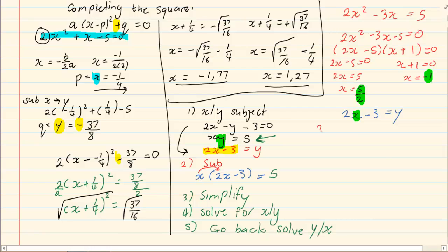So, we have 2 into 5 over 2 minus 3 is equal to y, y is equal to 2.